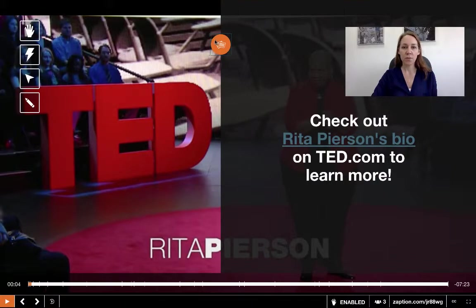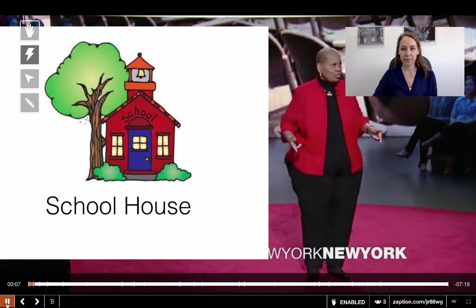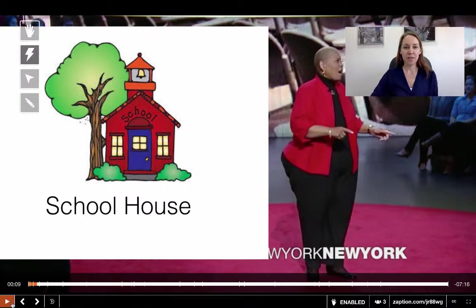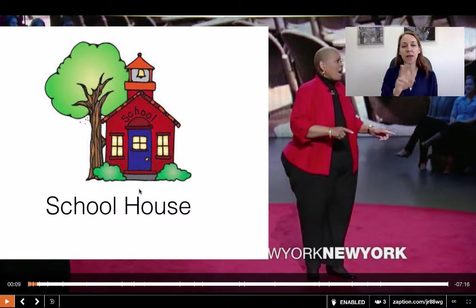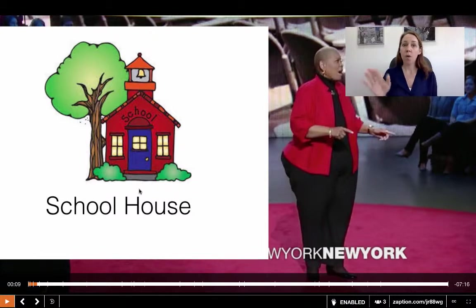As we go through you'll notice I'm just going to be pausing to give you a little bit of information here and there. Here's another element I've added — I've put an image on top of the presentation. You'll notice that there are words on this image; I've added those words outside of Zaption. In Zaption there is a limitation: you can either add text or you can add images, but you can't add both at the same time.